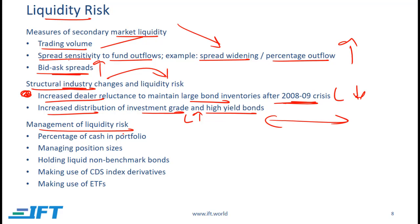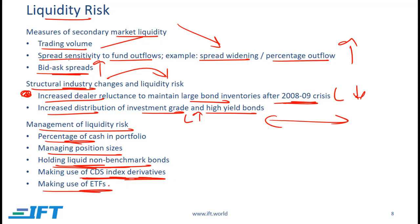Liquidity risk can be managed by including a relatively large percentage of cash in the portfolio, having larger weightings of more liquid bonds, holding liquid non-benchmark bonds, making use of CDX index derivatives — which are very liquid and give exposure to credit risk — or using exchange-traded funds, which are also quite liquid and give exposure to credit risk.